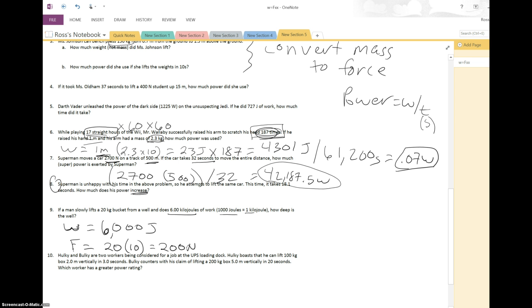Now we can start solving for distance, because how deep is the well? That's really just asking for how far down, what's the distance that the bucket travels. So if work is force times distance, let's just plug that in. 6,000 equals 200 times the distance. Divide both sides by 200. And distance, we are left with 30 meters.